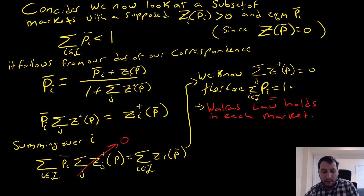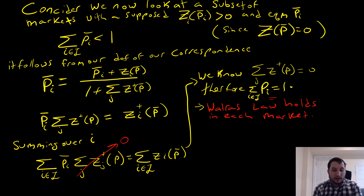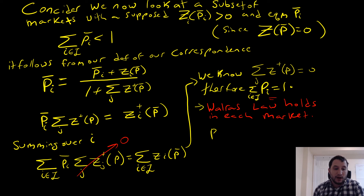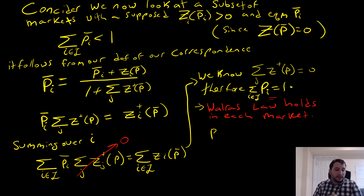You might be confused about how this proves that prices sum to one. Think of p_i as effectively a weight. If we rearrange these prices such that we're able to increase demand, our sum total of demands still equals zero. Since we can't shuffle these weights to end up in a situation with excess demand, the proof holds. So what we've learned is that we can use fixed point theorems to prove equilibrium existence, and why exactly a fixed point is an equilibrium. I hope this video helps — see you in the next one.